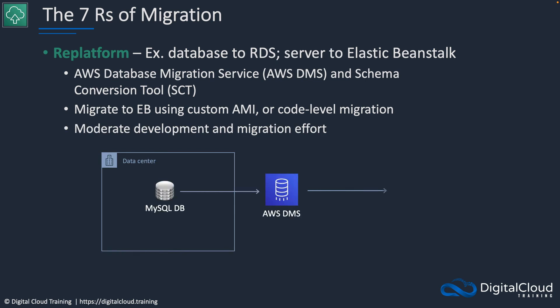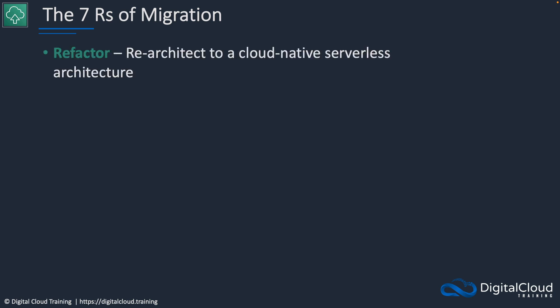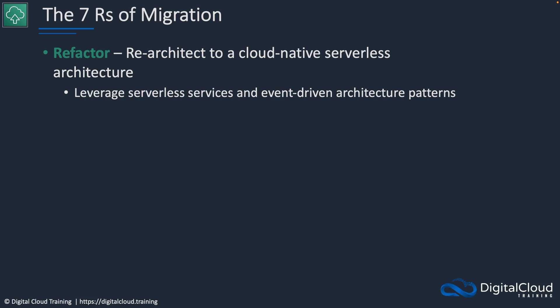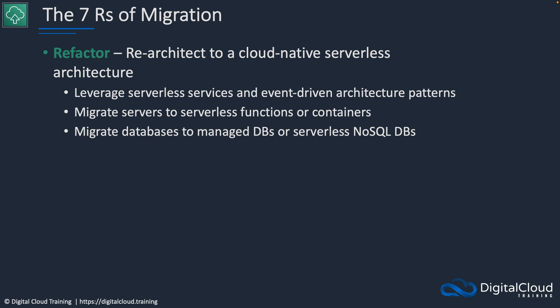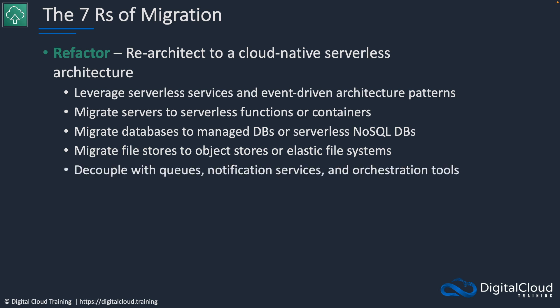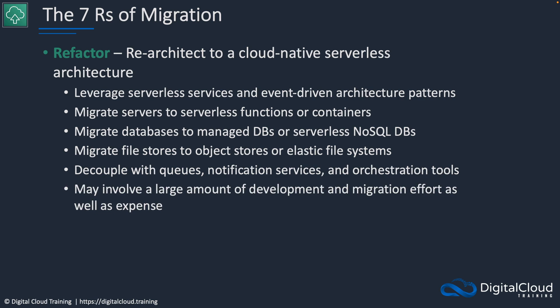Lastly, for refactoring, we're re-architecting to a cloud-native serverless architecture. You can leverage serverless services and event-driven architecture patterns. You can migrate servers to serverless functions or containers like Lambda and ECS, migrate databases to managed DBs or serverless NoSQL databases like DynamoDB, and migrate file stores to object stores like S3 or elastic file systems like Amazon EFS. You get to decouple with queues, notification services, and orchestration tools. This may involve a large amount of development, migration effort, and expense — but if it works for your workload, it can be a very good investment over time.